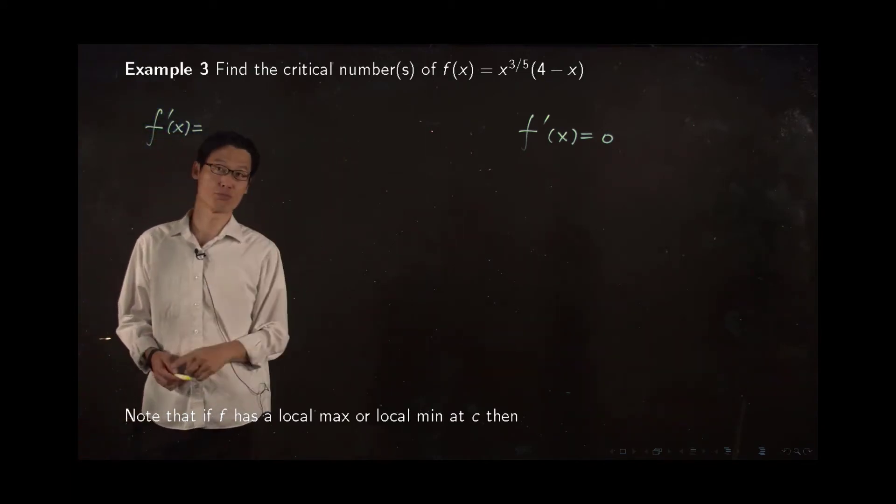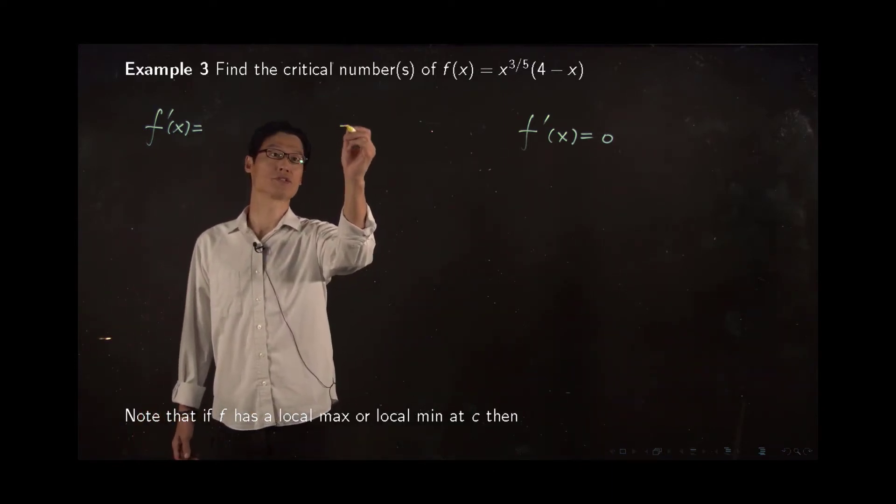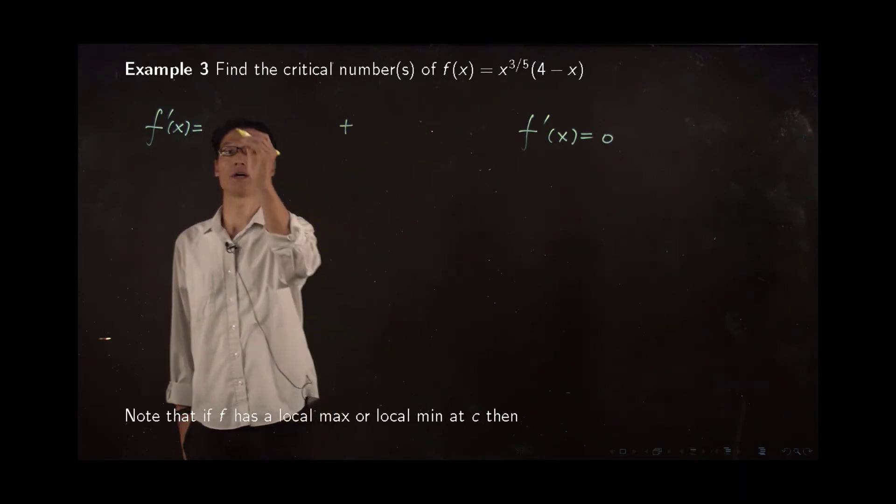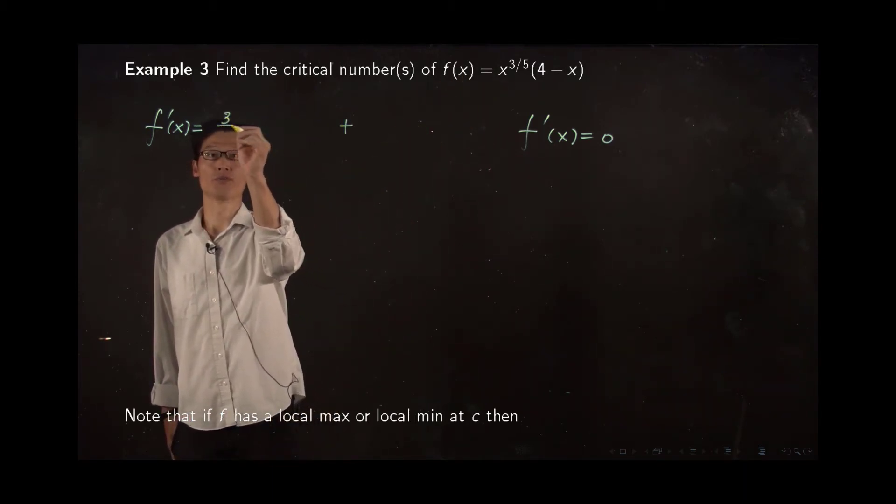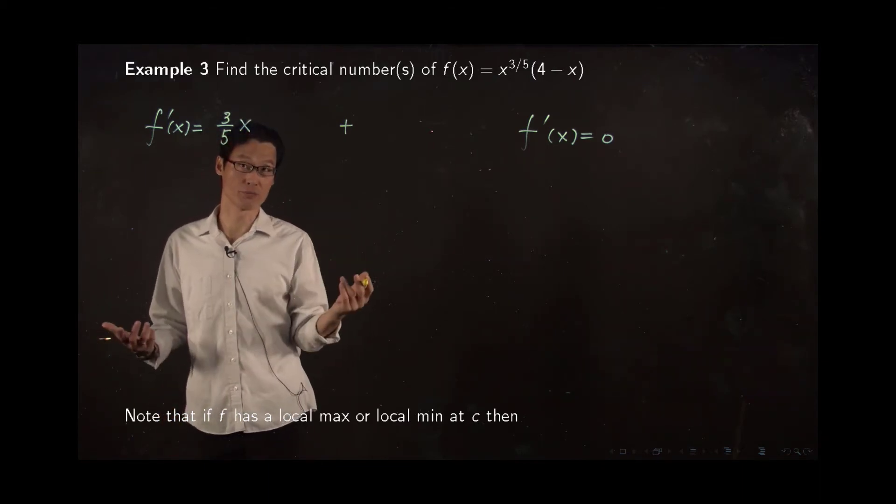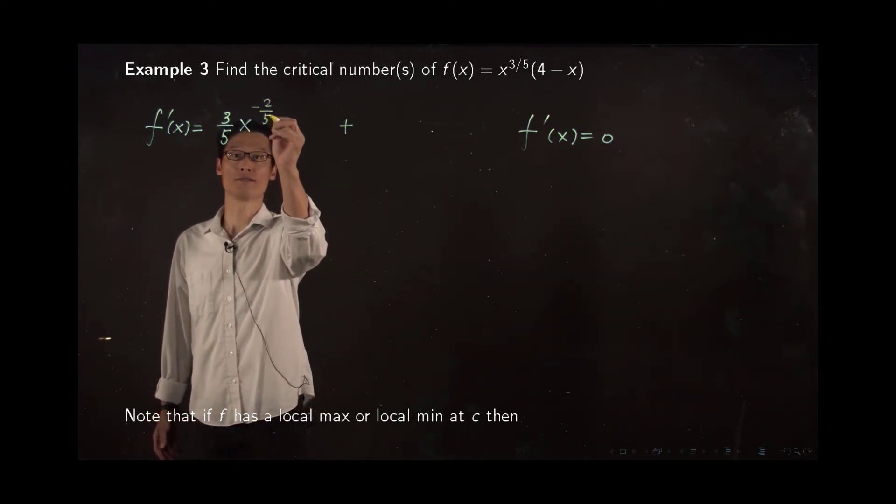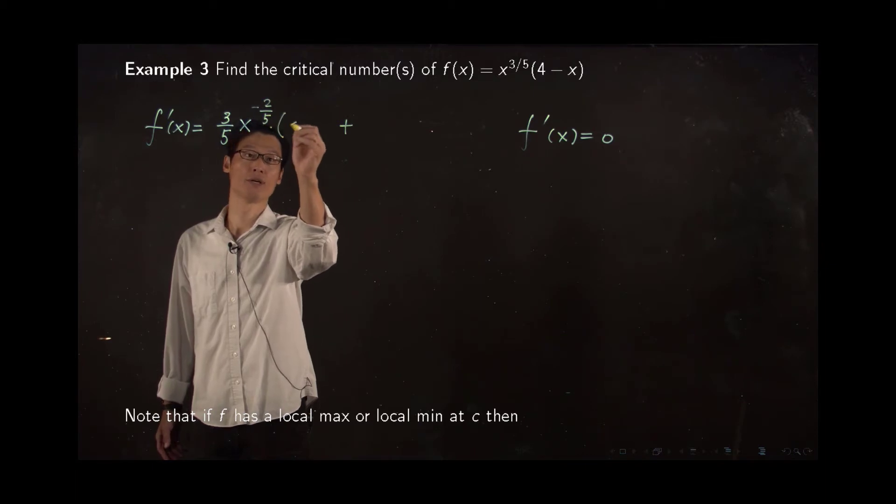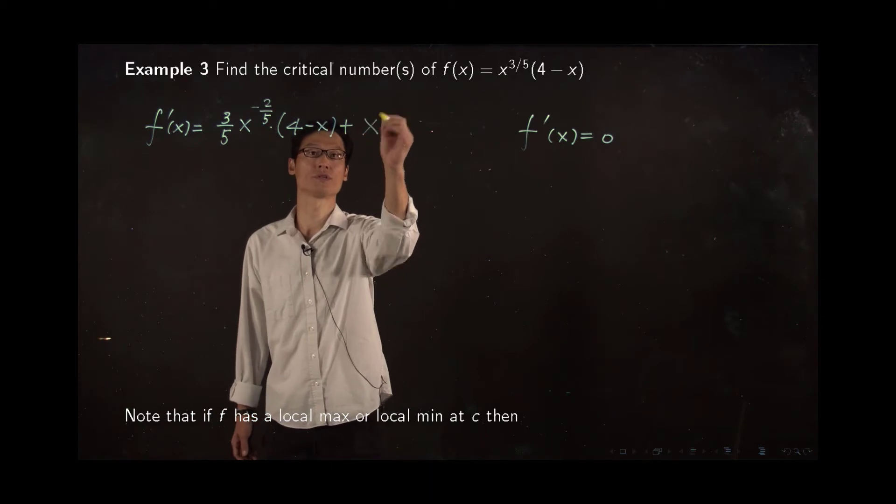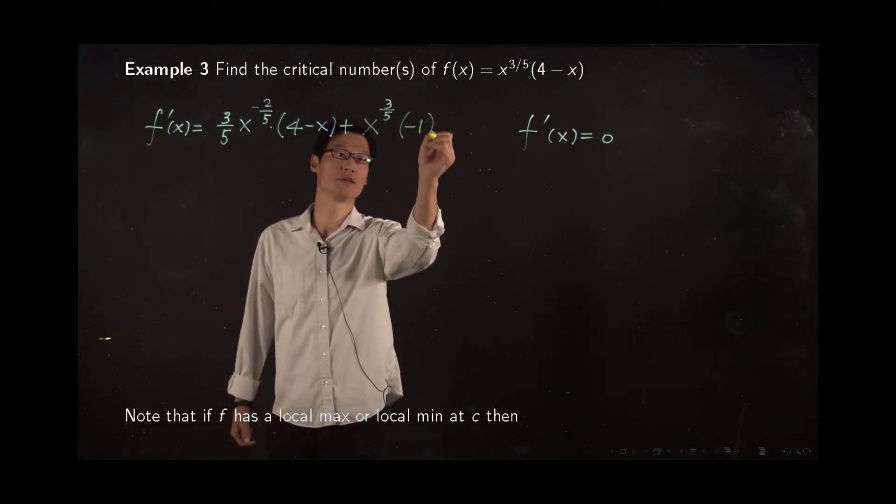Now that the function is a product, you can use product rule, which says derivative is sum of two terms. For the first term, you take derivative of the first guy. So 3 over 5 x to the new power is one less than previous, 3 fifths minus 1, negative 2 over 5. And then copy of second guy plus copy of first and then derivative of second, which is negative 1.